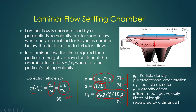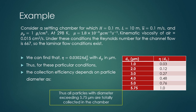All those parameters give the collection efficiency by the definition in equation 6, along with the terms defined in equations 7, 8, and 9 respectively. The terminal velocity, average gas velocity, height of the chamber, length of the chamber, particle density, particle size, and viscosity of the gas stream all affect collection efficiency.